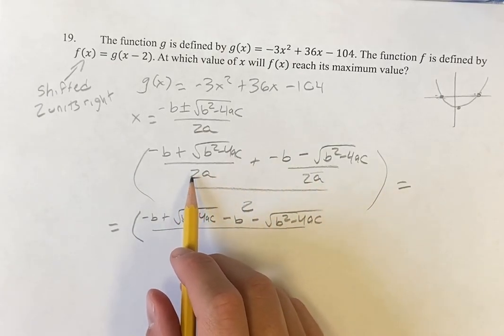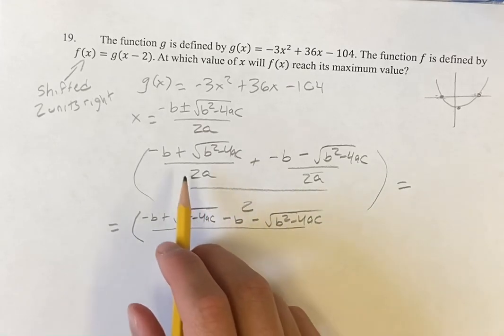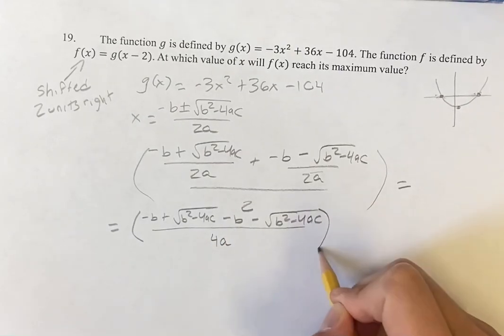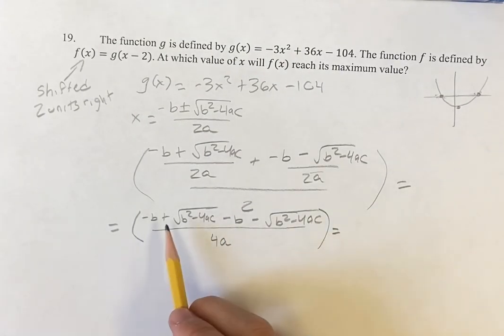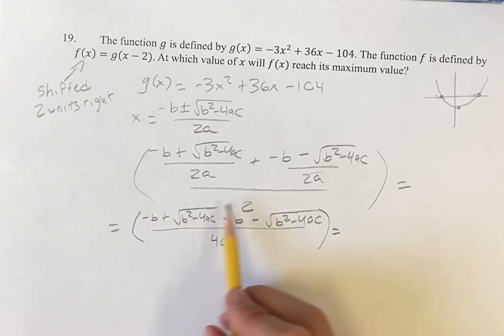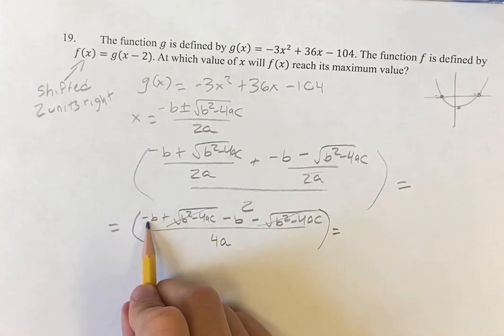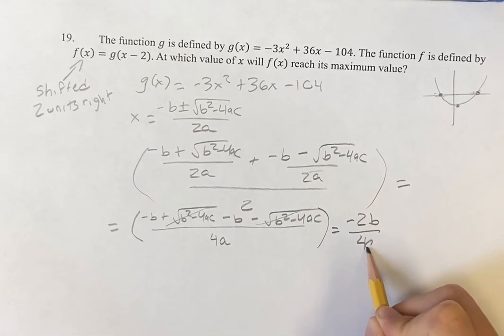Note that if we're dividing by 2a and then dividing by 2 again, we can multiply the things in the denominator. So that's going to be divided by 4a. The square root terms are going to cancel. I'm going to be left with negative 2b divided by 4a.